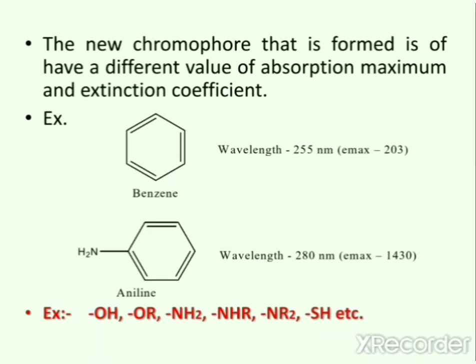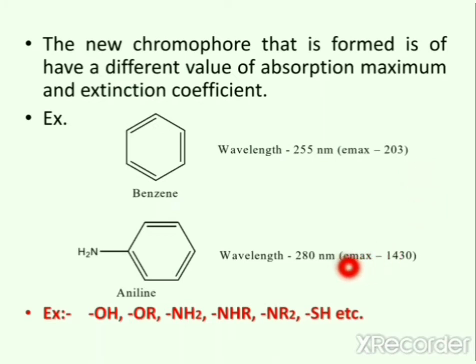Now the auxochrome not only shifts the value of wavelength but it also gives a different value of molar extinction coefficient, which is Emax. In this example, the Emax value for benzene is 203, while the Emax value for aniline is 1430. Examples of auxochrome include OH, OR, NH2, NHR, NR2, and SH groups.